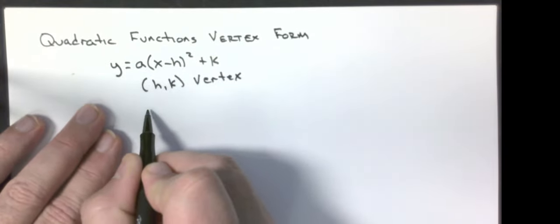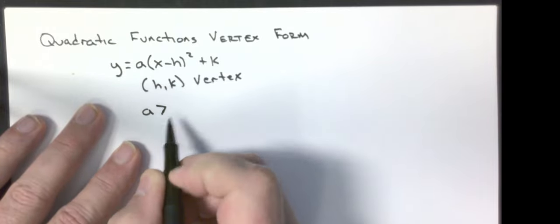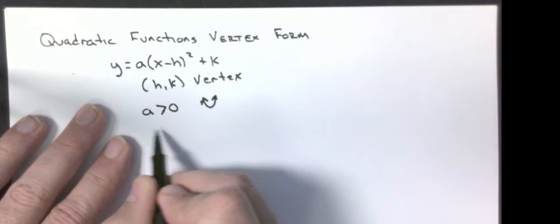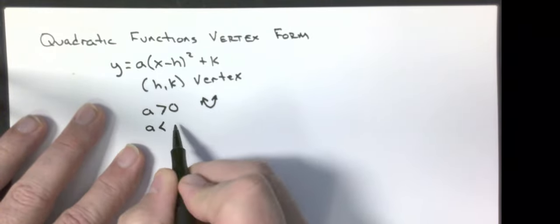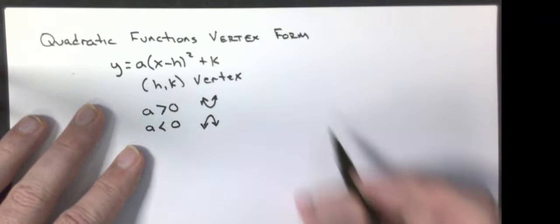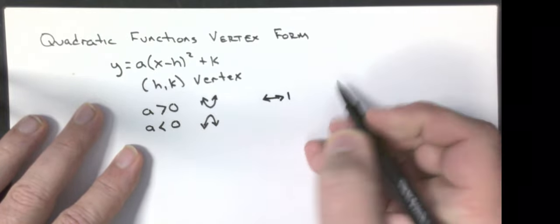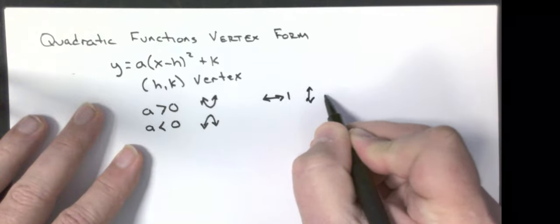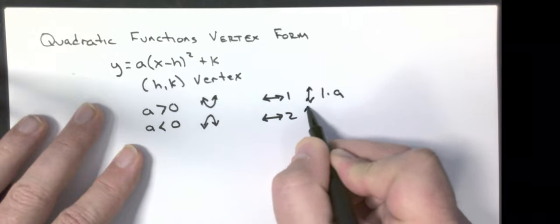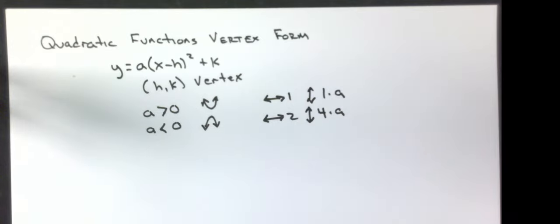The 'a' term determines the direction the parabola opens: if a is positive, it opens up; if a is negative, it opens down. We also use 'a' for graphing — from the vertex, go left and right 1, up or down 1 times a; then go left and right 2, up or down 4 times a.